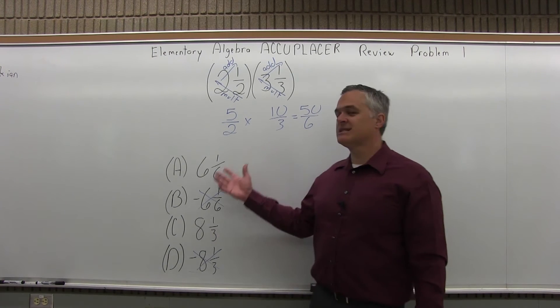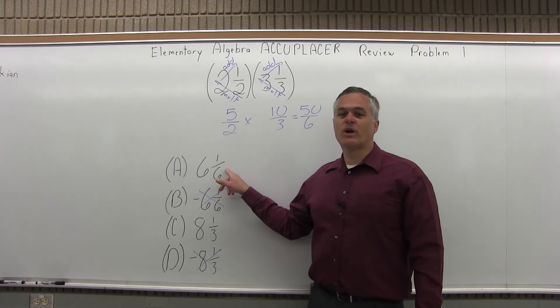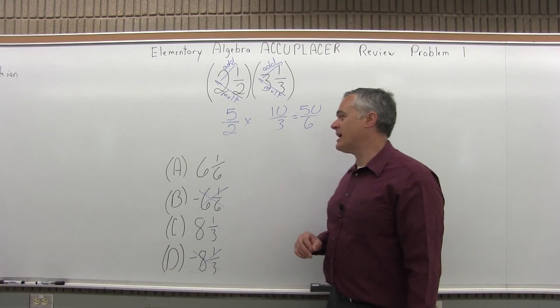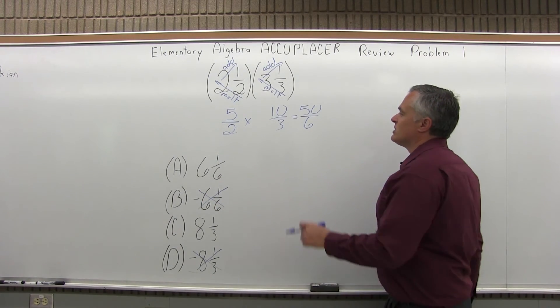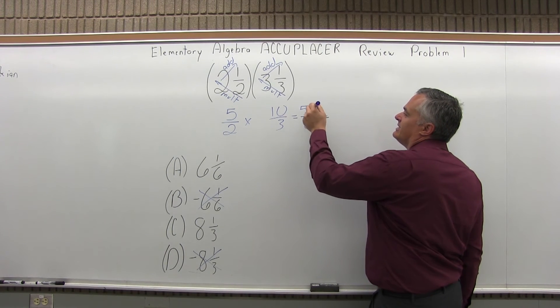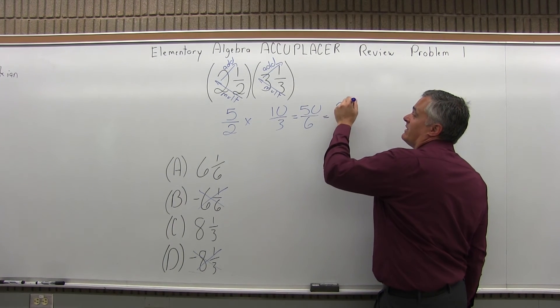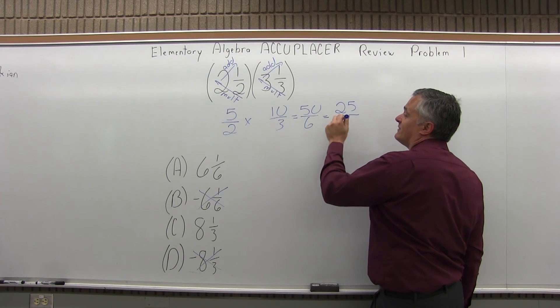Now 50 over 6 does not match any of my options. Since the denominator is 6, I'm leaning towards A right away. But we should try for a better match than I think it's A. So first of all, this is even, so I can at least cut them in half. So half of 50 is 25, and then half of 6 is 3.